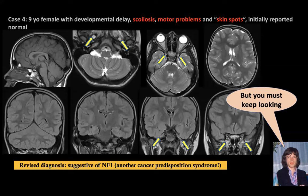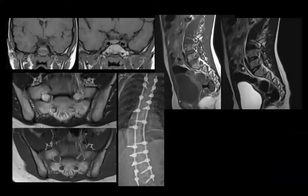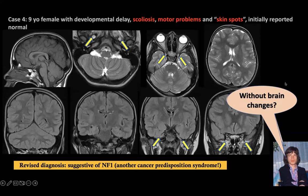We know NF1 presents with scoliosis and plexiform neurofibroma, and we know it's another cancer predisposition syndrome. However, look at this — smooth, enlarged nerves. There was no plexiform neurofibroma anywhere else. There's something off. If this is NF1, where are the brain changes? NF1 without any brain changes is possible, but more in adults than in children. So we need to keep looking. We scanned the spine, and the nerve enlargement did not look like plexiform — it didn't look like NF1 at all.